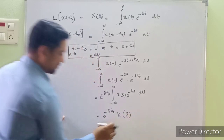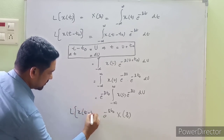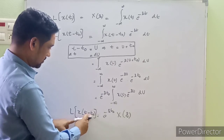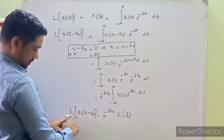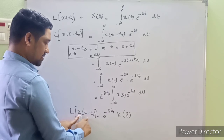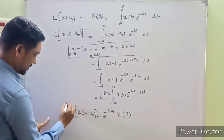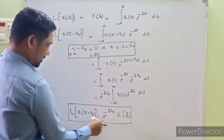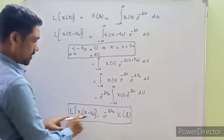Therefore, the final result is: the Laplace transform of X(t - t₀) equals e^(-s·t₀) · X(s). This means the Laplace transform of a time-shifted version of X(t) is the Laplace transform of the unshifted X(t) multiplied by e^(-s·t₀), where t₀ is the amount of shift. The shift occurs in time T, not in S. This is known as the time shifting property of Laplace transforms.